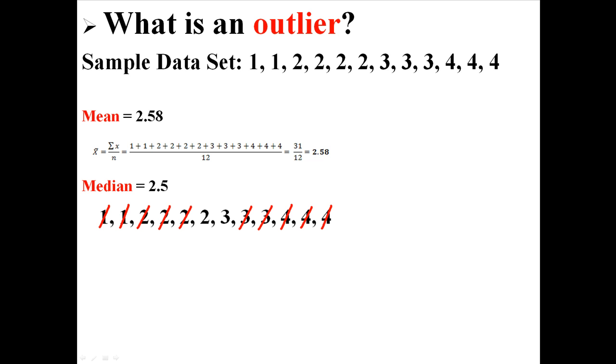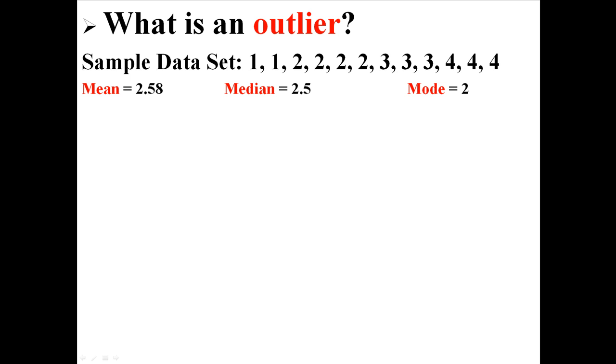I could find the median by finding the middle values. In this case, there were two middle values. I took the average of those and got a median of 2.5. Or I can find the mode, which is 2, because I have the most 2s. So let me put those numbers up there.